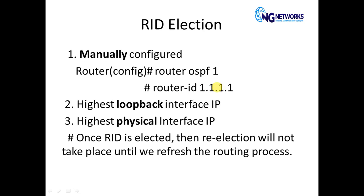If you have not configured the router ID manually, then automatically the router will select the highest loopback interface IP as the router ID. But if there is no loopback on the router, then the third priority will be given to the highest physical interface IP.